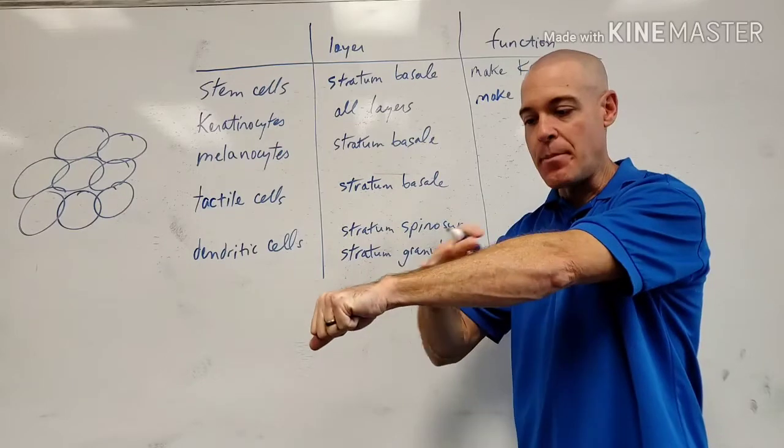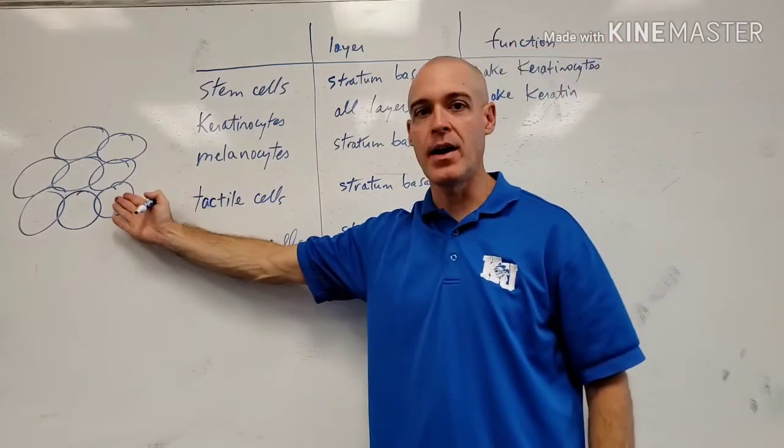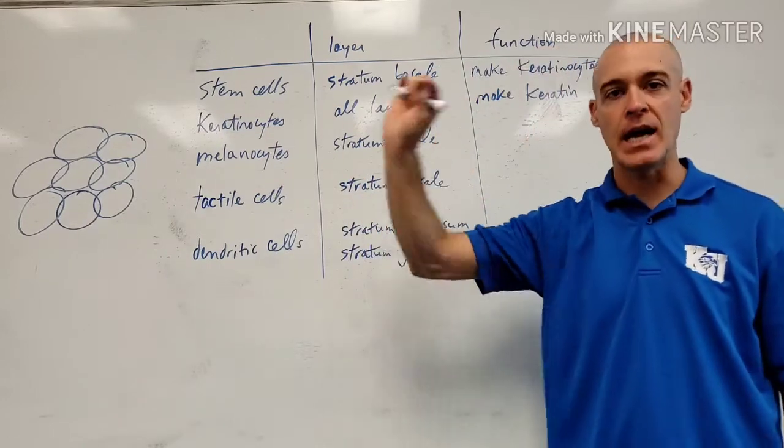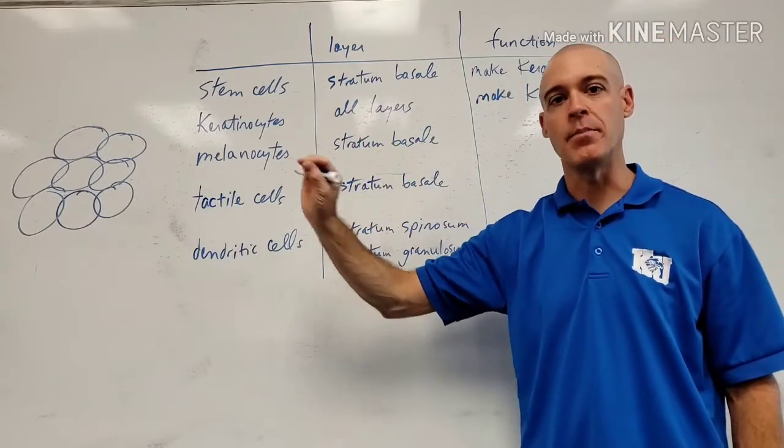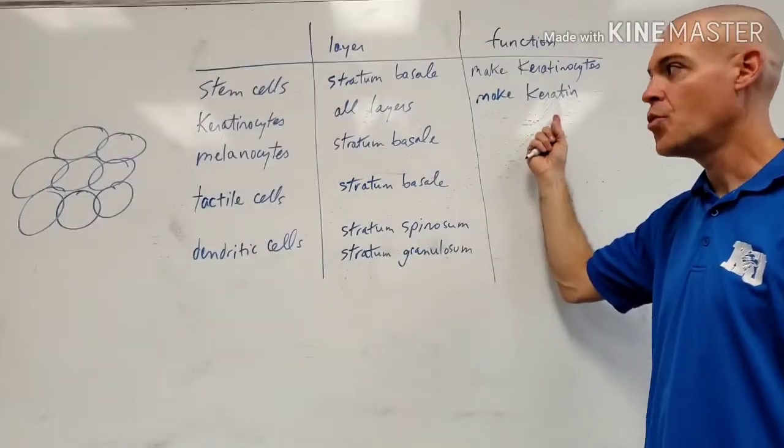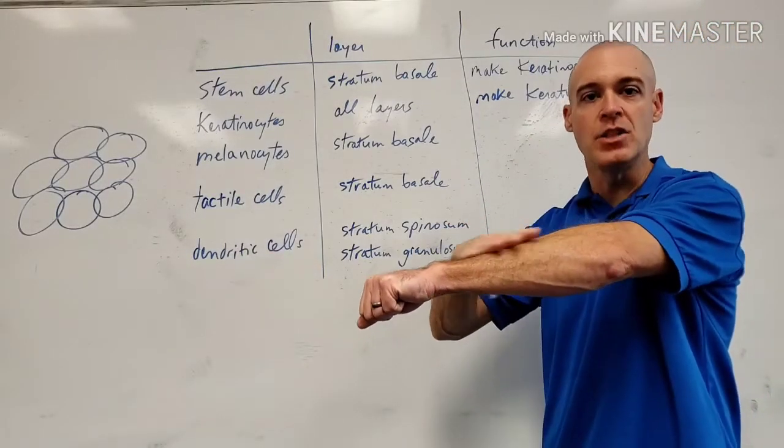Our epidermis is predominantly stratified squamous epithelial cells, but technically we can call it keratinized stratified squamous epithelium because it has this tough keratin layer which is really abrasion resistant.